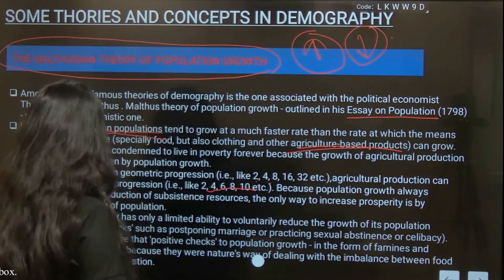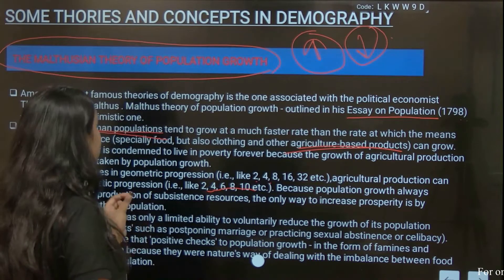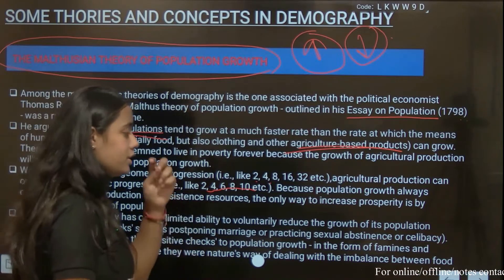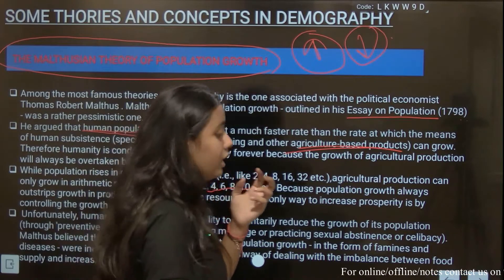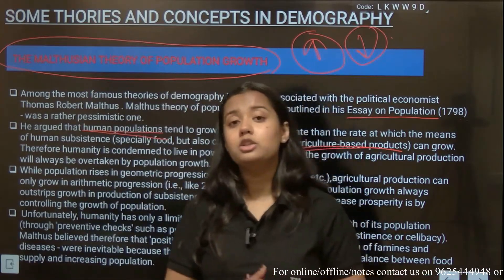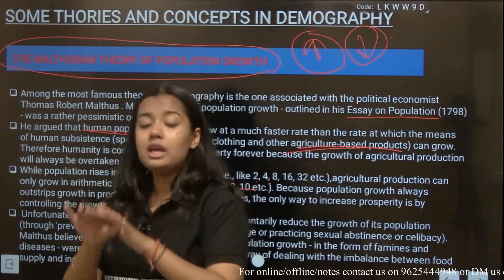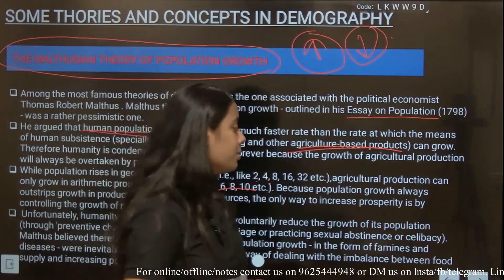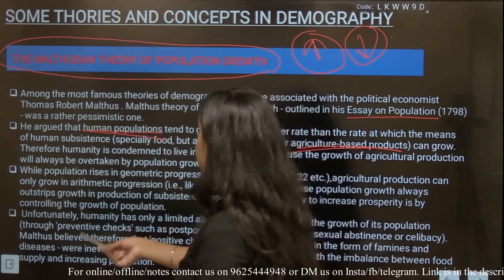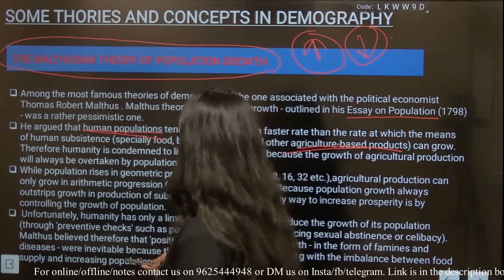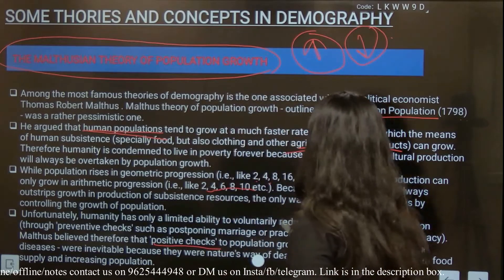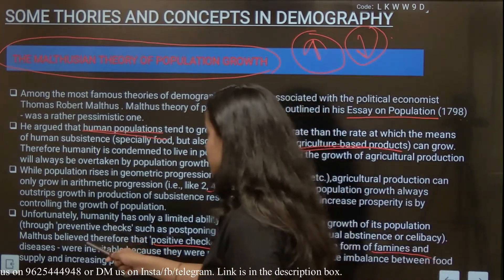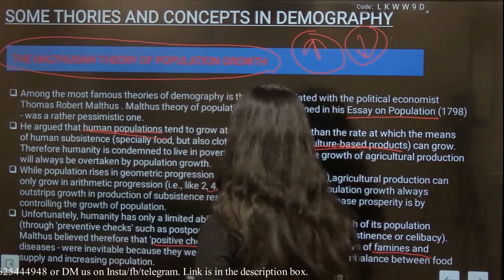Unfortunately, humanity has only a limited ability to reduce the growth of its population. Malthus believed therefore that there are positive checks to population growth, like famines and diseases, whereas there are also negative or preventive checks.